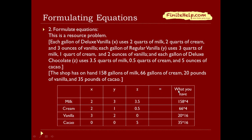Now you set it equal to what you have on hand. Here's a quote from the problem: the shop has on hand 158 gallons of milk, 6 gallons of cream, 20 pounds of vanilla, and 35 pounds of cocoa. You have to really pay attention to the units, because sometimes they try to trick you and use different units than what's on the left-hand side. The units on the left and right must match before you can set an equal sign between them.